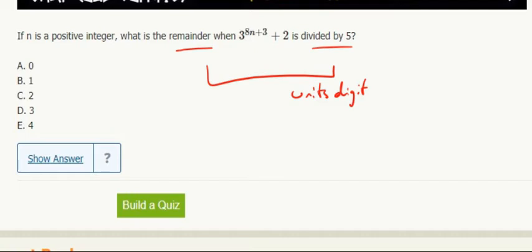Or if the unit's digit is 7, the remainder when divided by 5 is 2. 5 goes into 327, well, 5 goes into 325, and there's 2 left over. So this is just asking for the unit's digit.